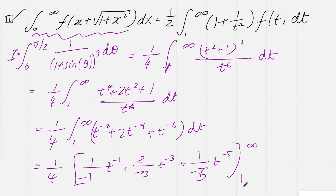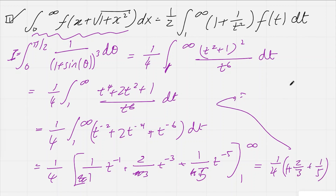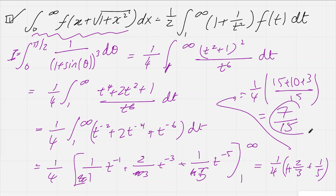The infinite limits all give 0, so we only need to evaluate at t = 1, which removes the negative signs. We get ¼ × (1 + 2/3 + 1/5). Putting this over a common denominator of 15: 15/15 + 10/15 + 3/15 = 28/15. Then ¼ × 28/15 = 7/15. So the value of ∫₀^{π/2} 1/(1+sinθ)³ dθ = 7/15.